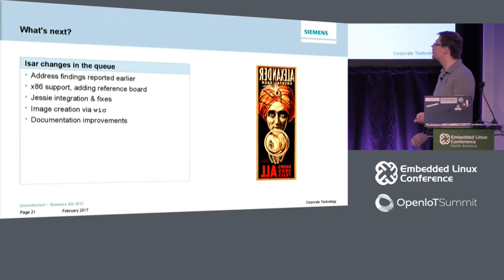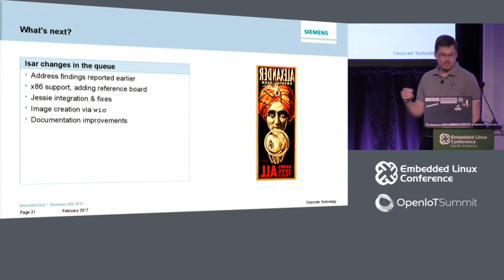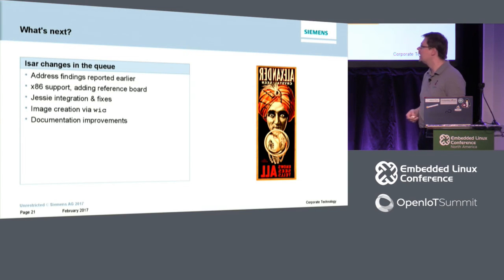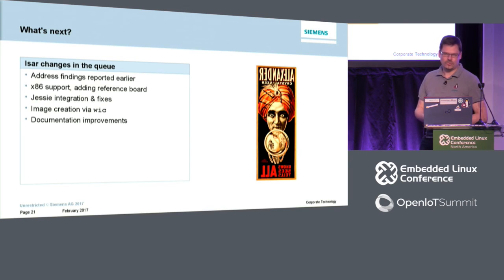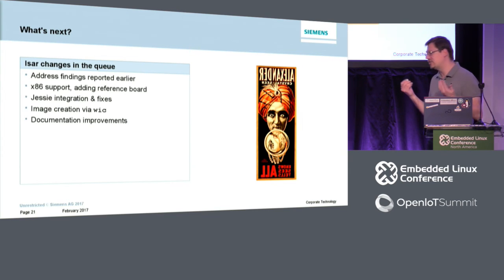What's next on the queue? The findings from our evaluation are on the to-do list and should be resolved soon — some were already resolved just before this presentation. x86 support is something we're looking into; there are some patches for QEMU already but a real system is waiting to be bootstrapped. We want to add a reference board for x86 definitely. Jessie — the Jessie version of Debian — is being enabled in the development branch and needs to be integrated to master. Image creation via Wic is planned, shareable between existing build systems and ISAR. And documentation can always be improved.